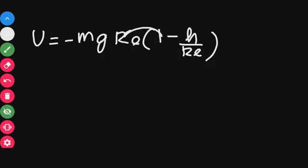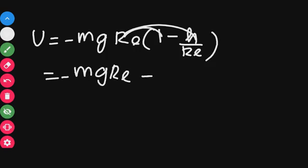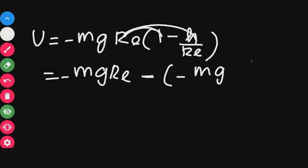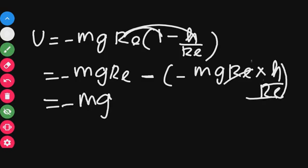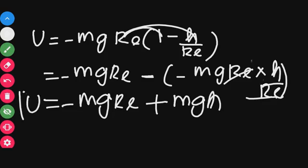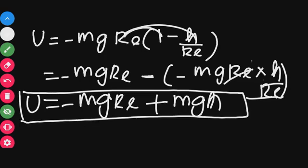So U equals minus m g R_E into 1 minus H by R_E. Multiplying inside the bracket: minus m g R_E times 1 is minus m g R_E, and minus times minus H by R_E gives plus m g H. So U equals minus m g R_E plus m g H.